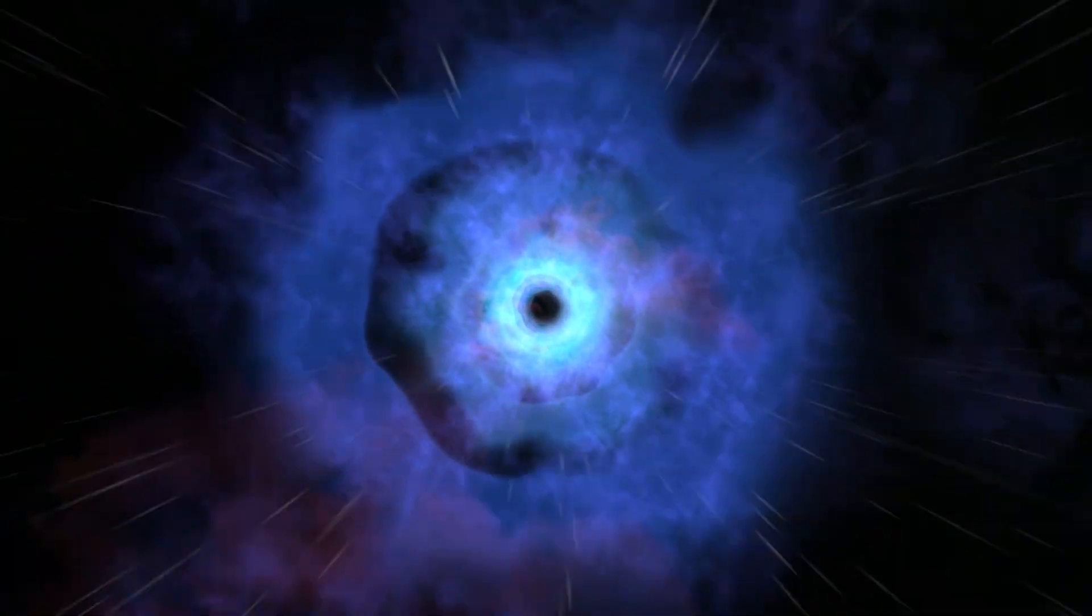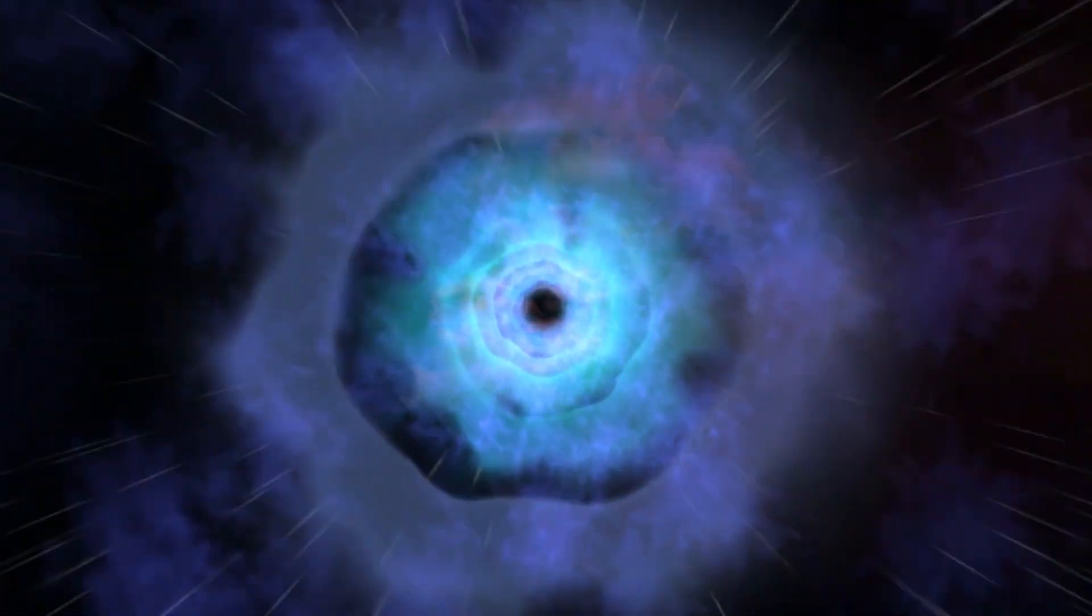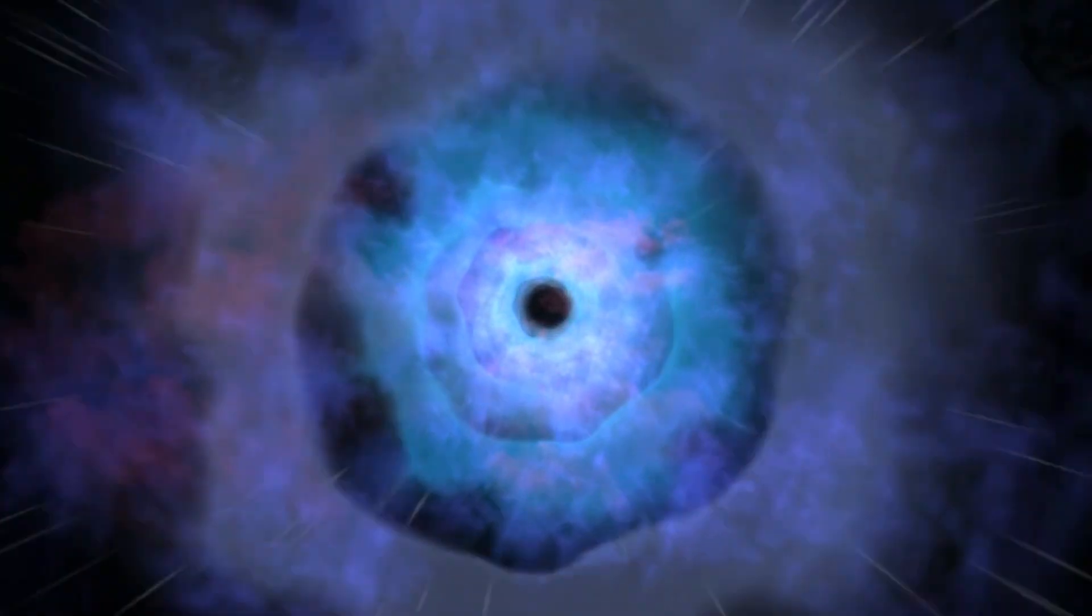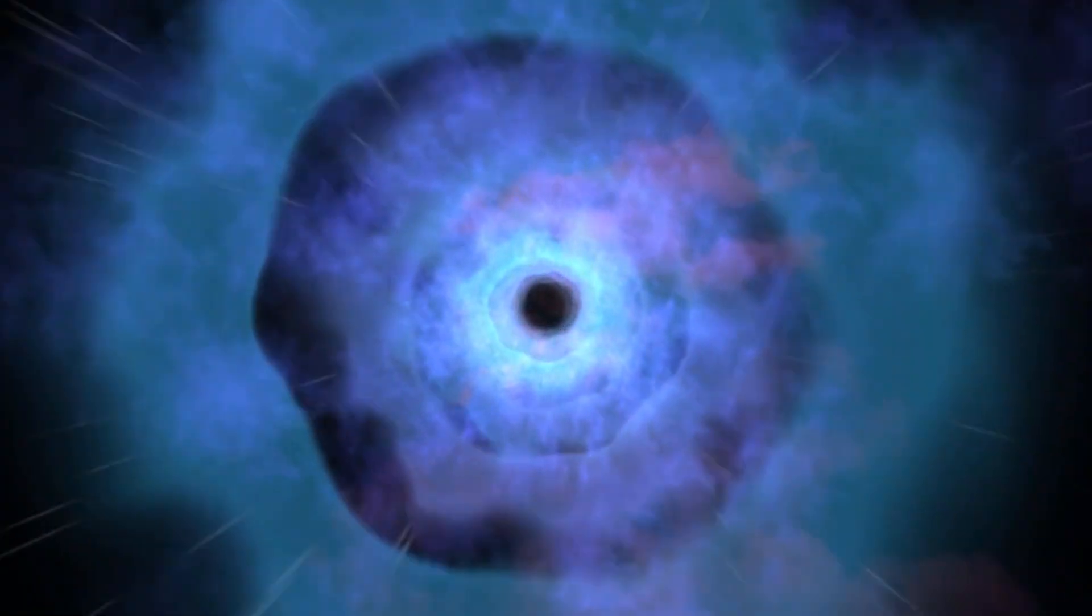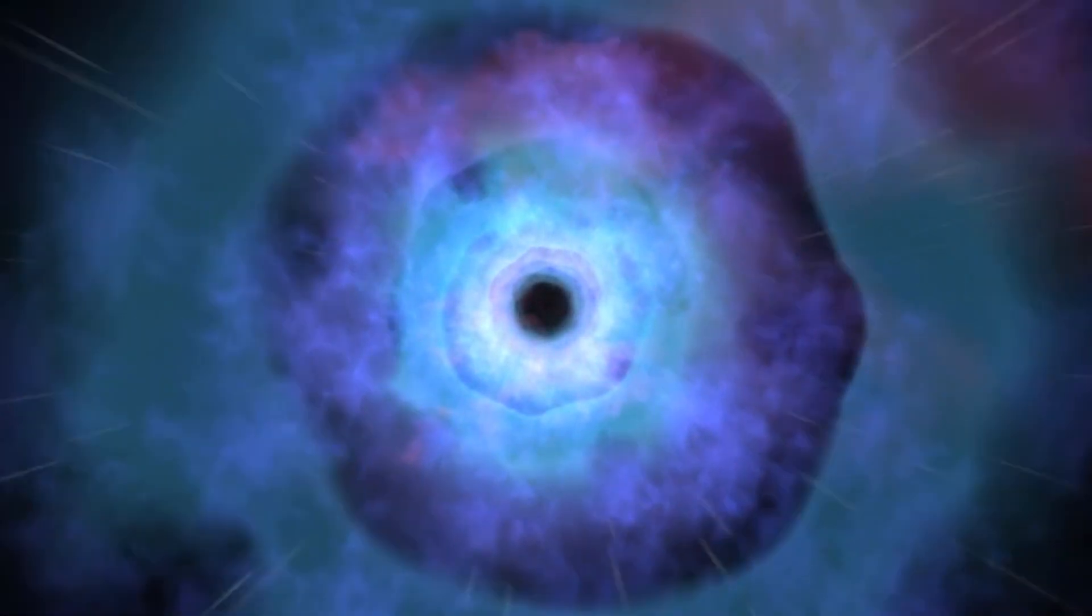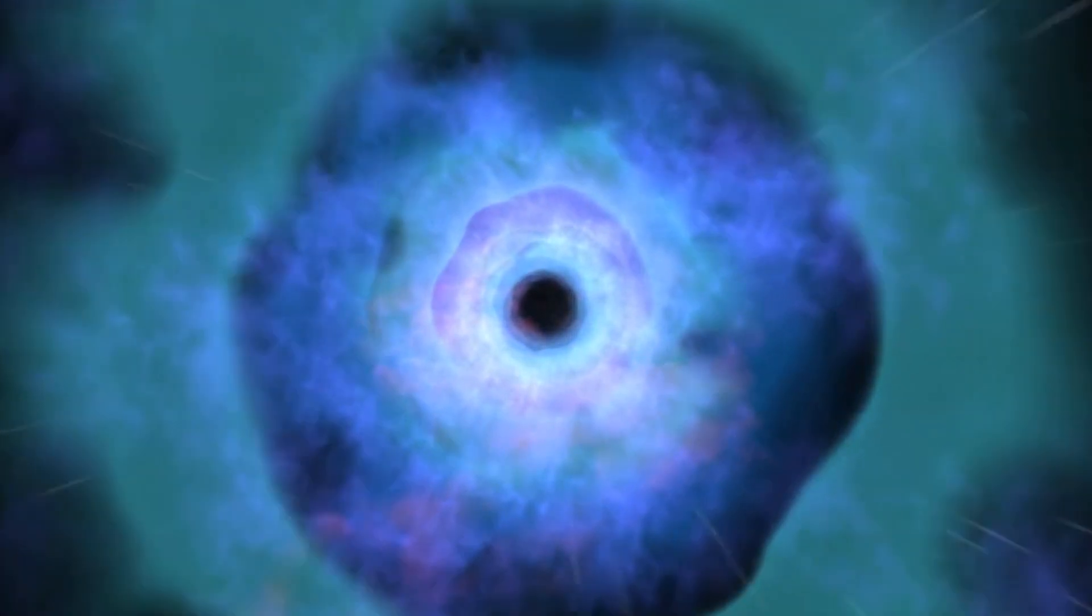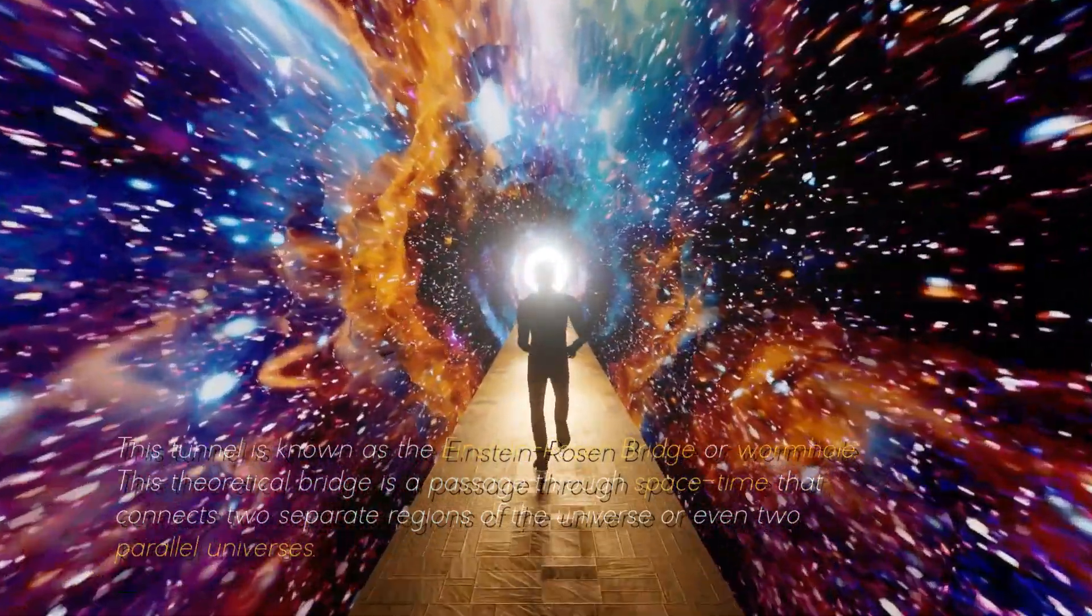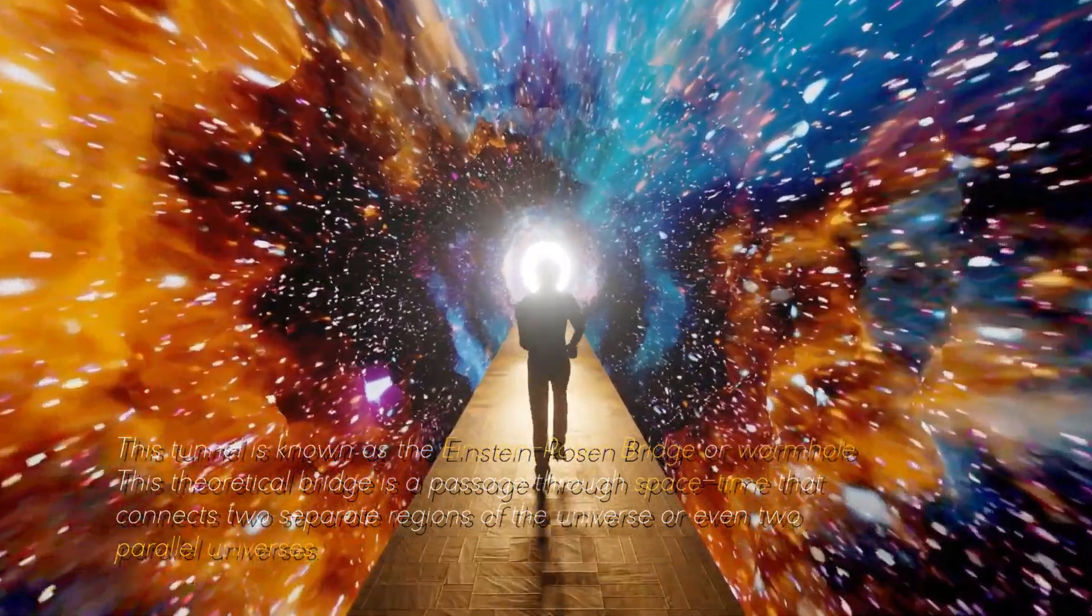You're probably wondering what lies beyond the third layer called the singularity, right? The idea is that, instead of being crushed by falling into a black hole, one would be sucked through a tunnel through the ring of fire and emerge through a white hole somewhere else in a parallel universe. This tunnel is known as the Einstein-Rosen Bridge, or wormhole.